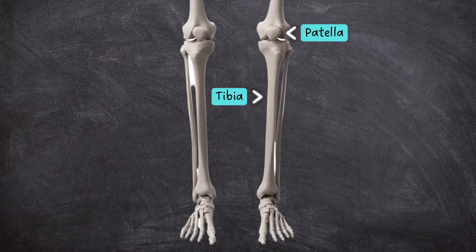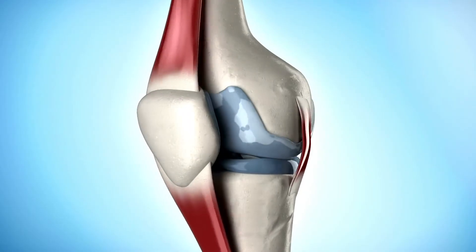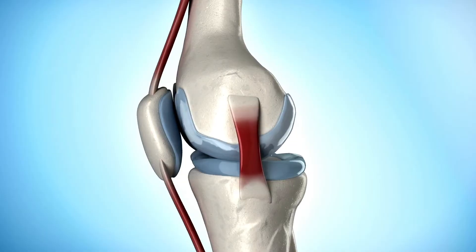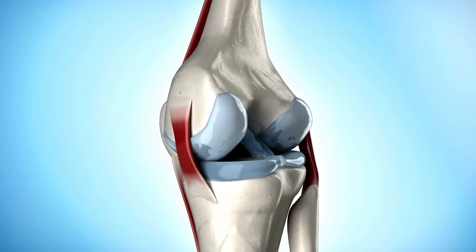The patella is a flat, sesamoid bone that sits within the quadriceps tendon and helps to both stabilize the knee joint and protect its internal structures.